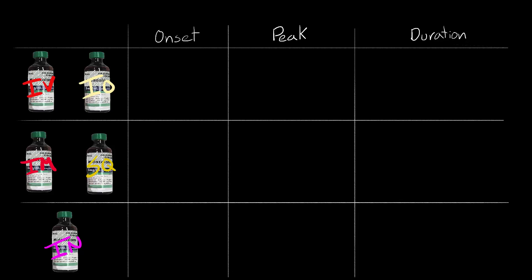Duration. For IV and IO, the onset is 1 minute, peaks in 5 minutes and lasts up to 2-6 hours. For IM and SQ, onset 5-10 minutes, peaks in 30 minutes and lasts up to 2-6 hours. Intranasal: onset 10 minutes, peaking in 1 hour, and lasting again 2-6 hours.